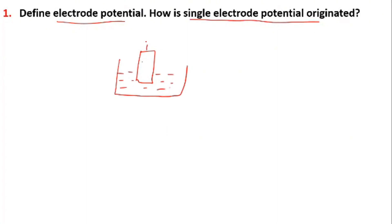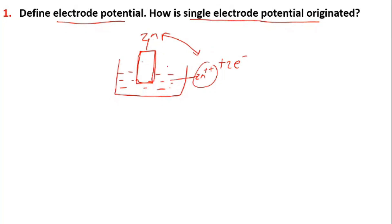Suppose we take a zinc example. Zinc is placed in a zinc ion solution. It is oxidized — zinc loses two electrons, forming zinc ions. Zinc changes to ions through oxidation, loss of electrons, and the electrode becomes negatively charged. The solution becomes positively charged. Zinc ions surround the electrode forming an electrical double layer. There is a charge separation.